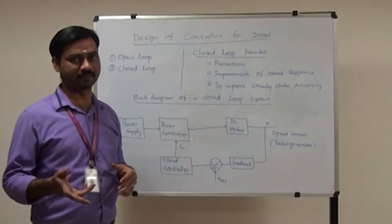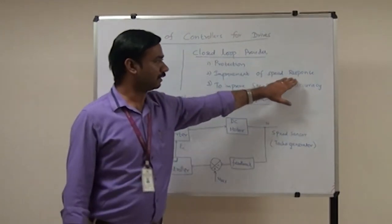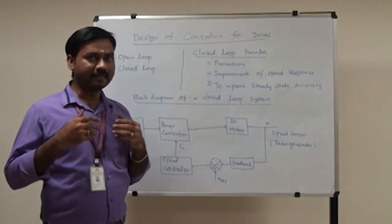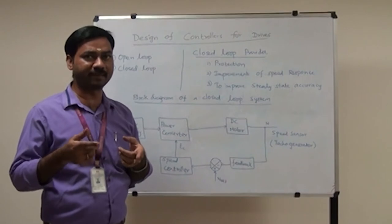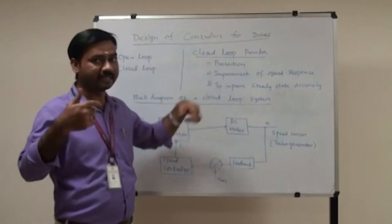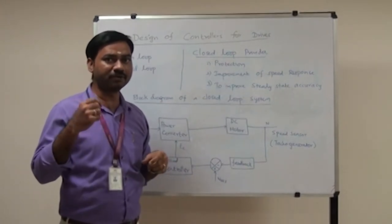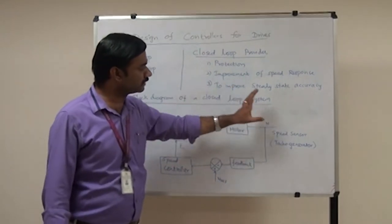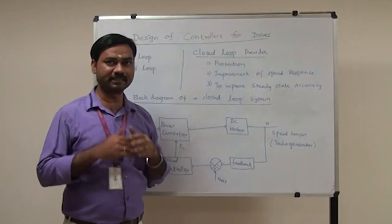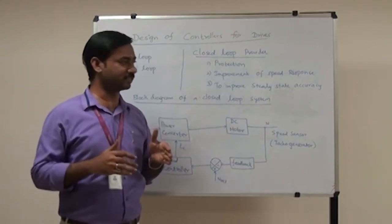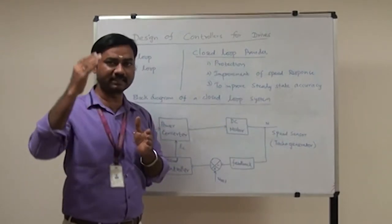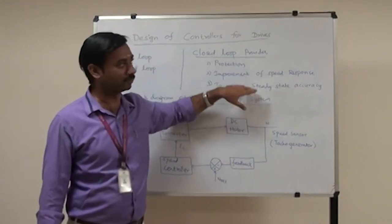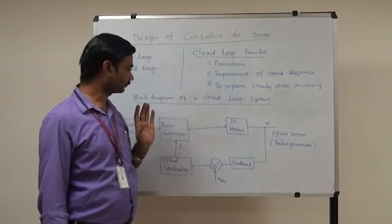The second benefit is improvement of speed response. This means that when we want to increase the speed of the motor, it should respond immediately and increase; when we want to decrease the speed, it should immediately reduce. The third benefit is to improve steady state accuracy — that is, when the motor is running at a constant speed, we need to maintain that constant speed ratio. A controller is used for all three of these purposes.